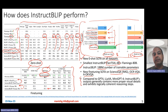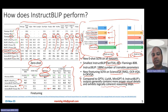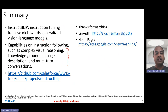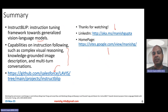Lastly, when comparing qualitatively, they did not show quantitative comparisons with GPT-4 or LLaVA, but when compared qualitatively with GPT-4, LLaVA, and MiniGPT-4, they observe that InstructBLIP's outputs generally contain more proper visual details and exhibit logically coherent reasoning steps. In summary, InstructBLIP is an instruction tuning framework for vision-language models that builds on BLIP2. It showcases capabilities in instruction-following around complex visual reasoning, knowledge-grounded image description, and multi-turn conversation tasks.